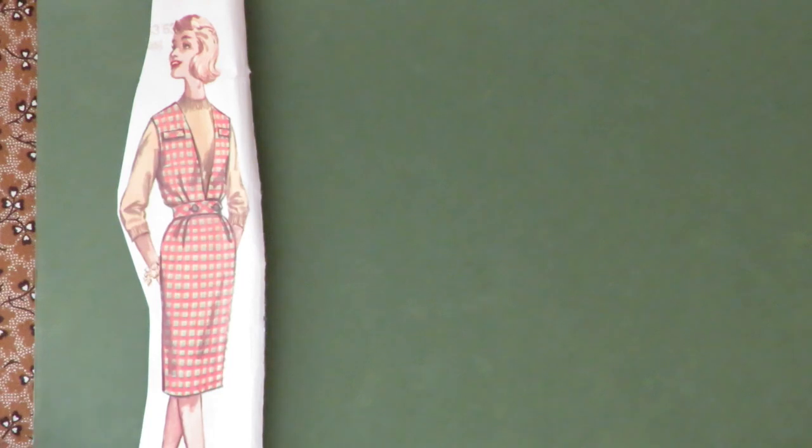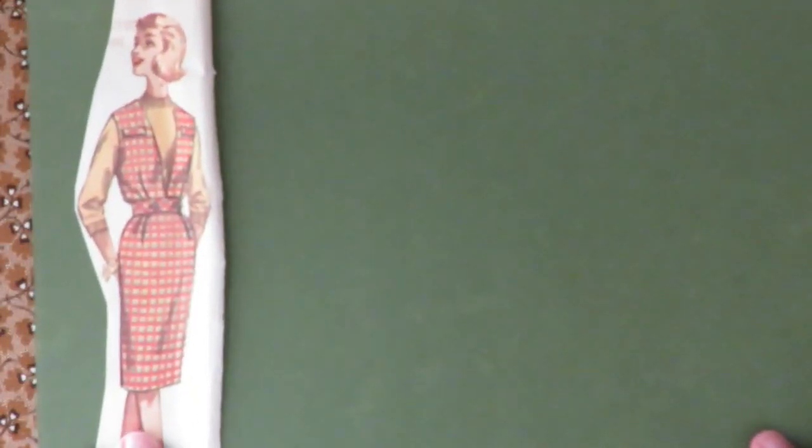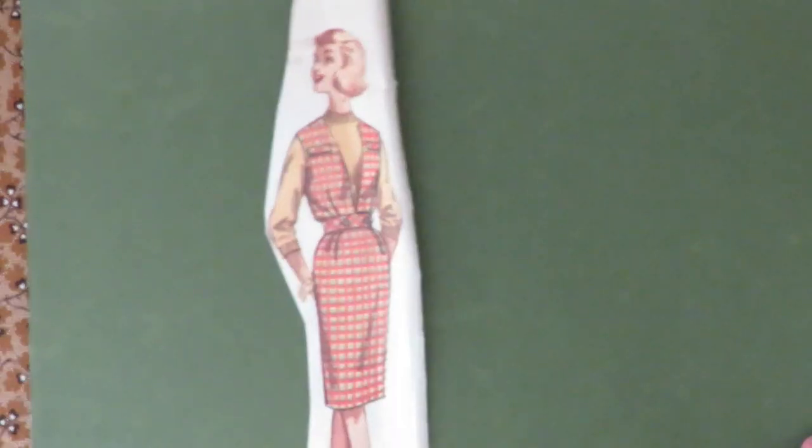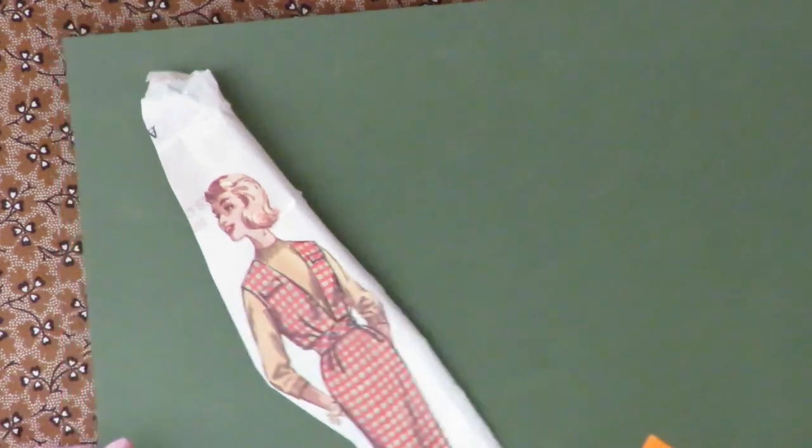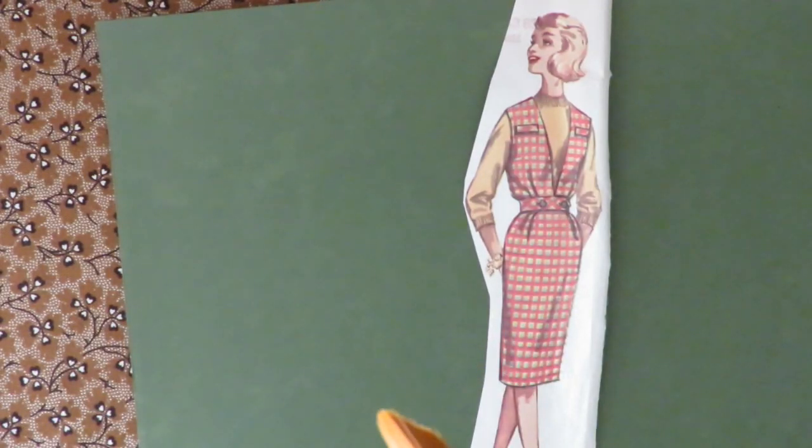What you want to do is cut out your image loosely and then put your image with mod podge down onto your cardstock or file folder or whatever it is that you're using. I chose to use some textured cardstock. It's smooth on one side and textured on the other so I'm going to put the girl down on the smooth side.